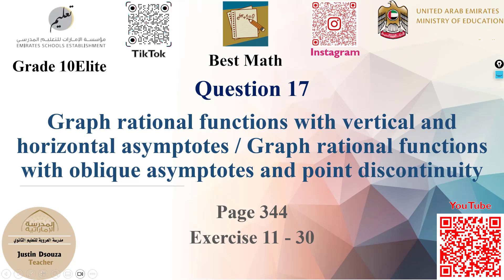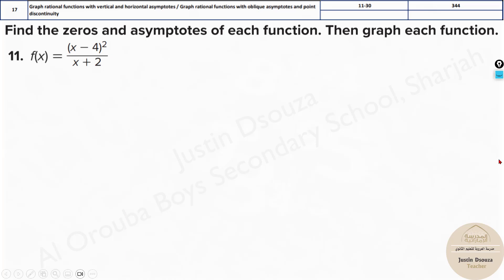In this video we will learn how to graph rational functions with their asymptotes. Here we have a rational function. The first thing is to try to expand the function. We can see it's x minus 4, the whole square.